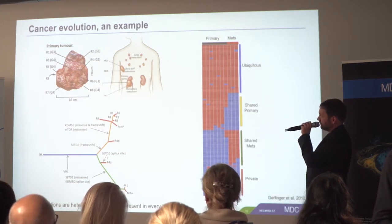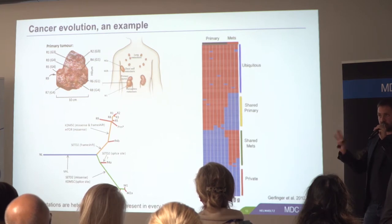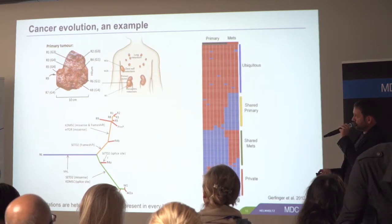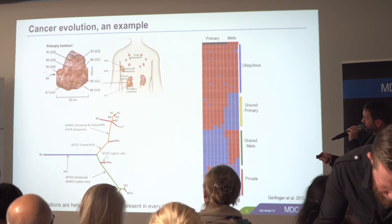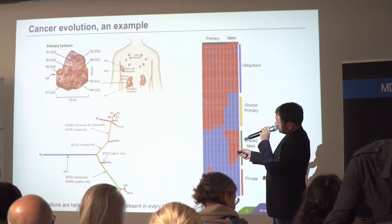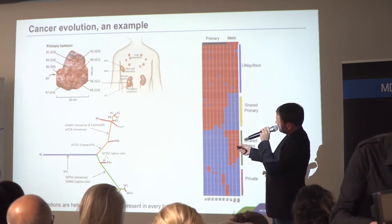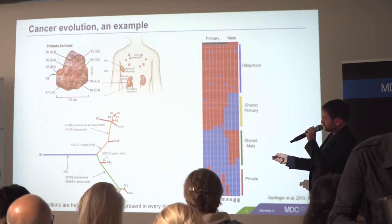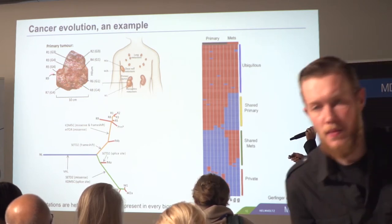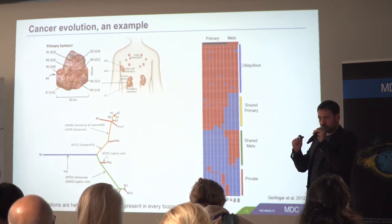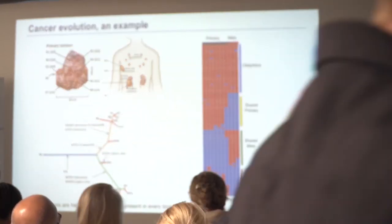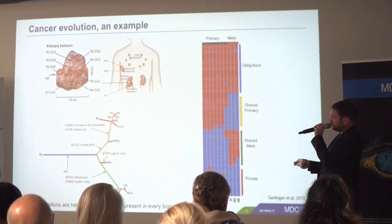Cancer evolution: this is a fantastic early example from 2012 by colleagues at the Crick Institute. They took a single kidney tumor and dissected it into different regions — R1, R2, R3, R4, and so on. Altogether it was a 10 cm tumor. They cut it into chunks, sequenced those, and looked at the mutations — the changes in the DNA compared to healthy tissue from the same patient — to reconstruct the evolutionary history.